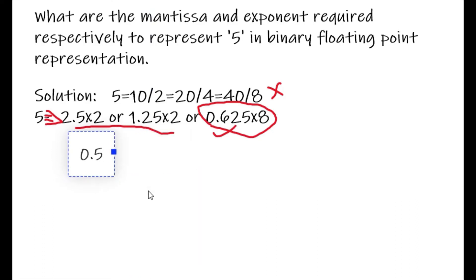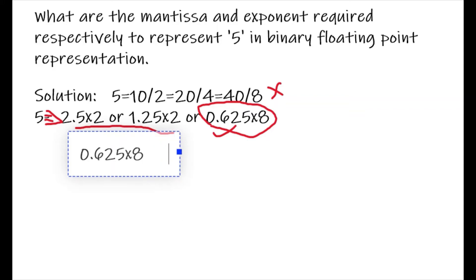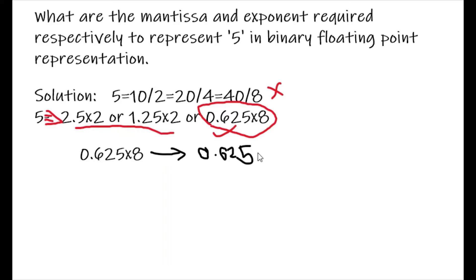So this is our floating point representation: 0.625 multiplied with 8, which is 0.625 times 2 to the power 3. Now you need to convert 0.625 into binary form. So how do you convert 0.625 to binary? Let me show you.